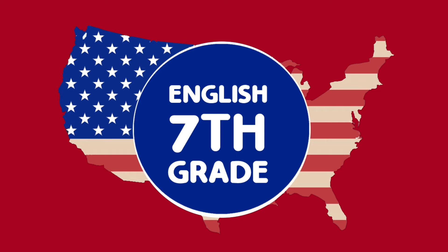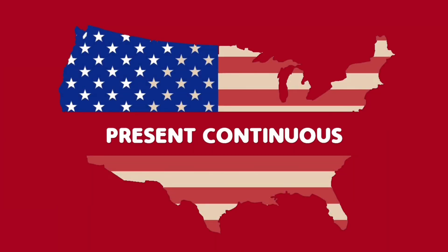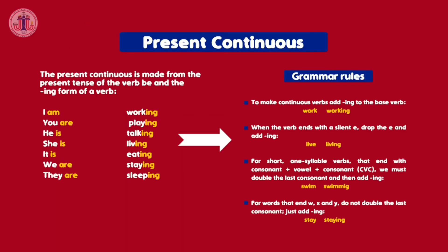Good morning, this is teacher Ines. Our class today is about present continuous. The present continuous is made from the present tense of the verb 'be' and the -ing form of a verb.